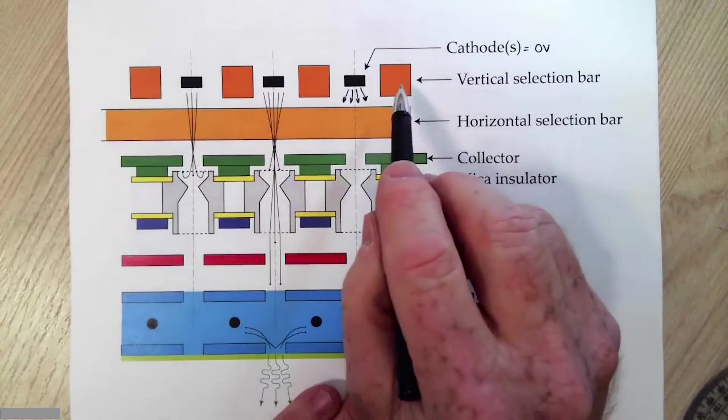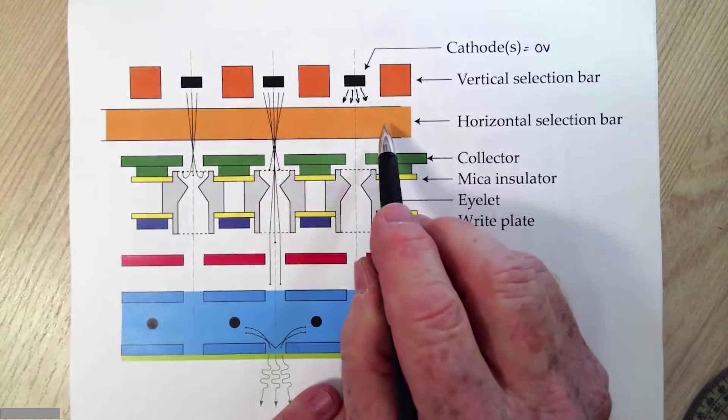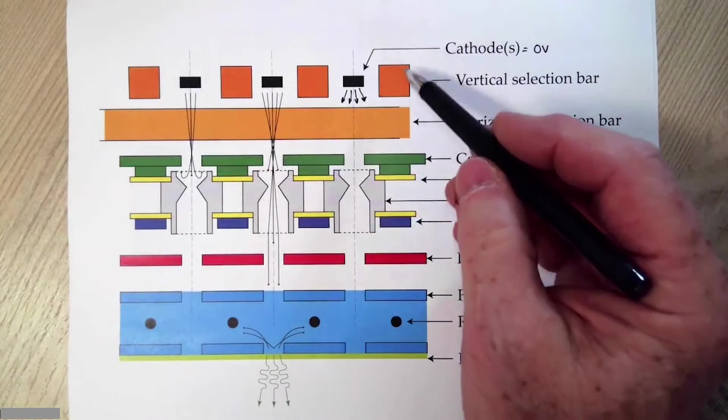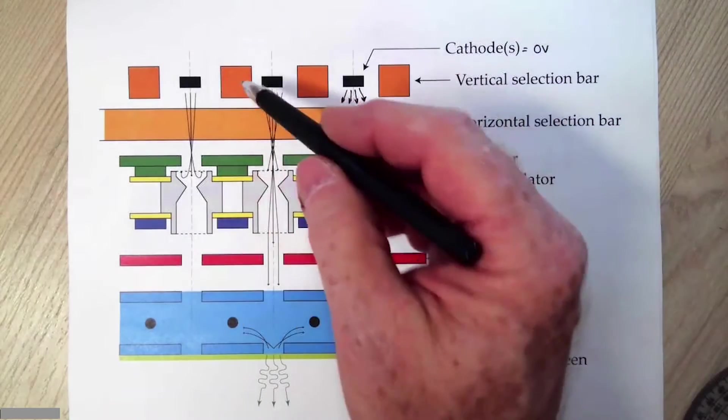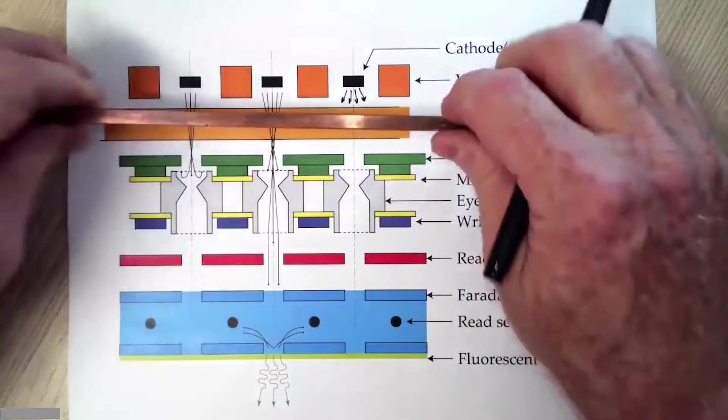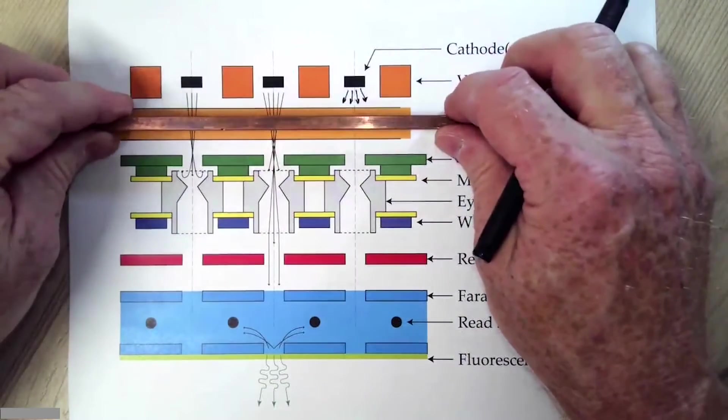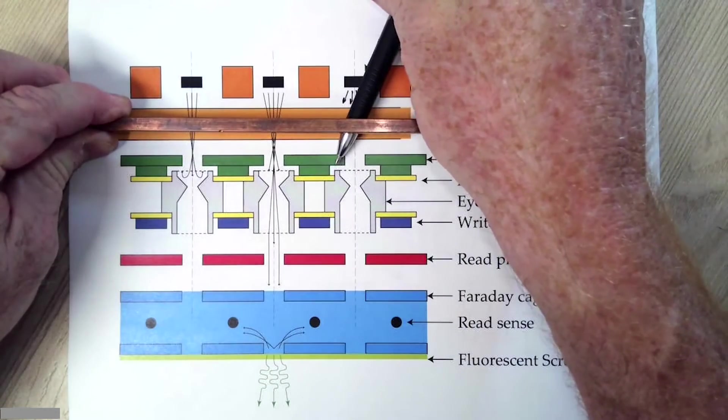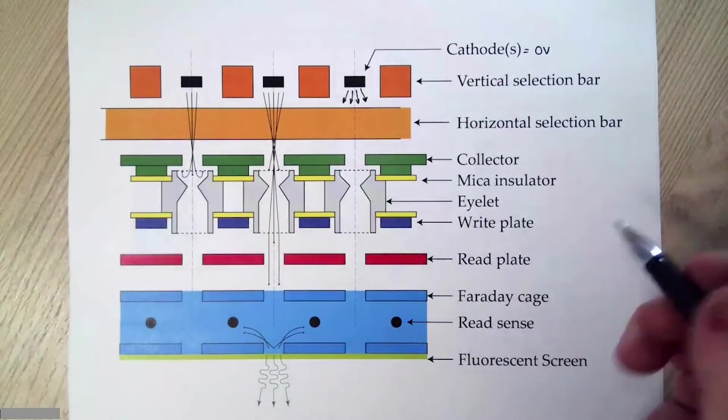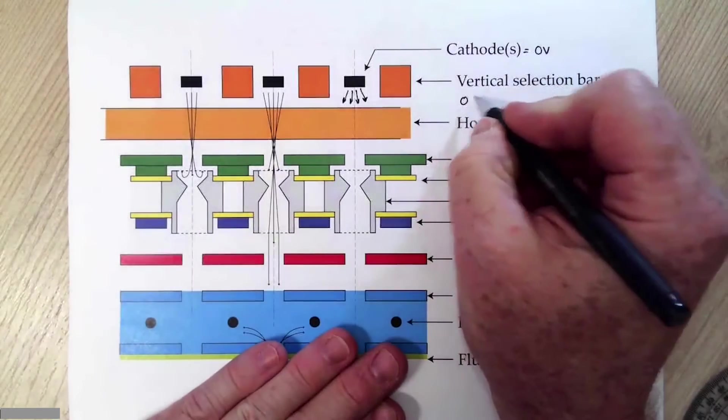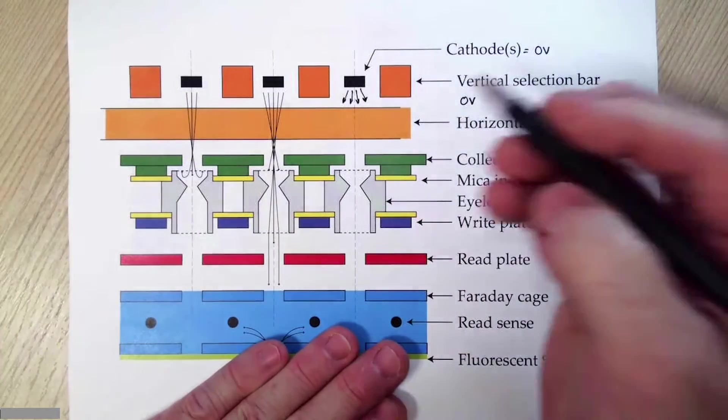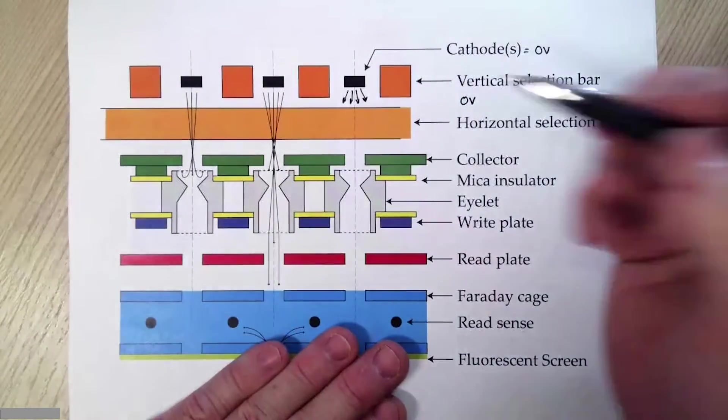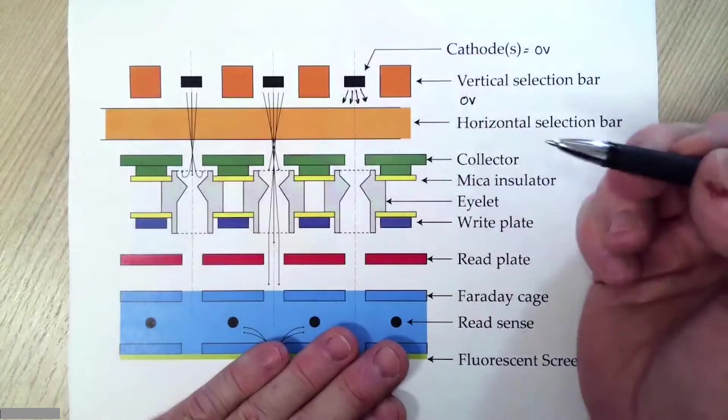The bias potential for this sets the potential for everything. So we might as well make this zero volts or ground. Next, we have our vertical and horizontal selection bars. This is, of course, drawn in cross-section. Just imagine we've got these bars coming up in and out of the page. Horizontal selection bars, I have a stack of these. And what we're trying to do is get the electrons through the spaces in between them.